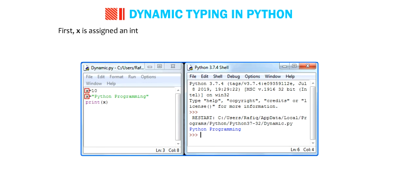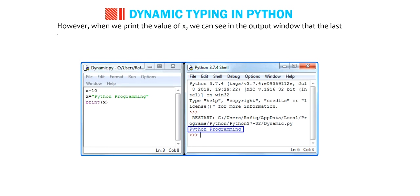First, x is assigned an integer value, then in the next line, a string value is assigned to x. However, when we print the value of x, we can see in the output window that the last value assigned to x is printed.